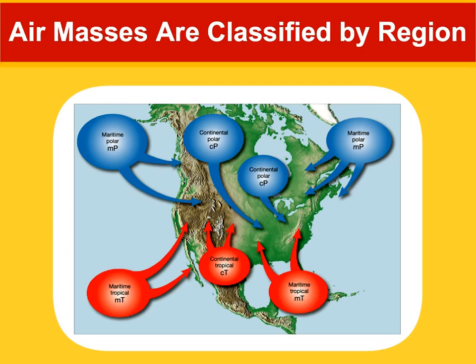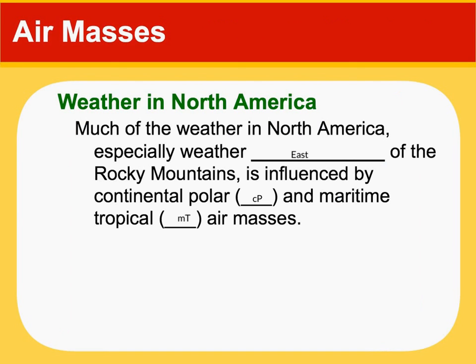Putting it all together: maritime tropical air coming from the Gulf of Mexico brings warm, moist air to the southeast United States. In Las Vegas, we're getting continental tropical air, especially in summer — very hot, very dry. Most of the weather east of the Rocky Mountains involves cold air masses from Canada mixing with moist, warm air from the south, creating quite a bit of exciting weather. The mountains play a significant role in weather through orographic lift, so we'll focus on the eastern US because it's flat.